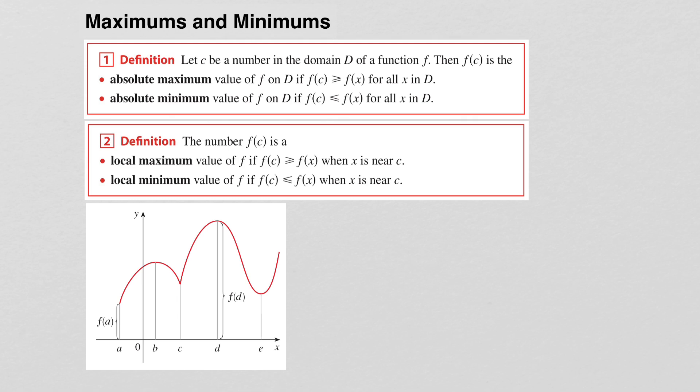This definition is fairly intuitive. It basically just says that to be the absolute maximum value of a function it has to be the highest point, and to be the absolute minimum value it has to be the lowest point.